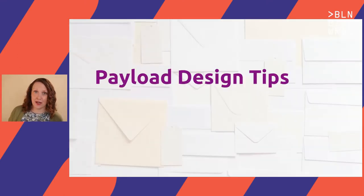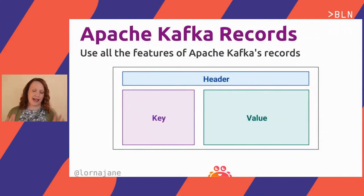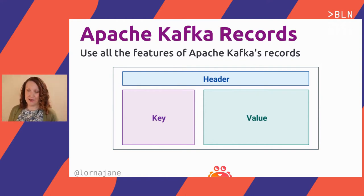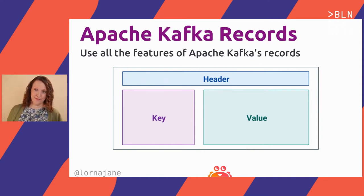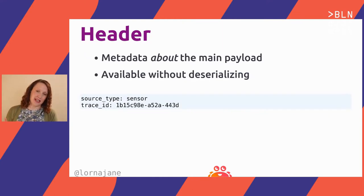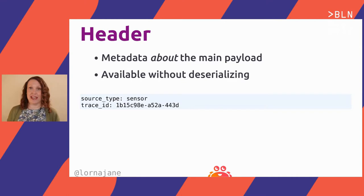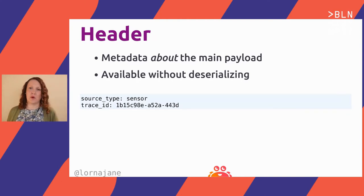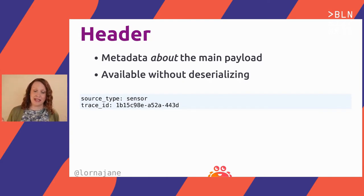Some tips then for designing your payloads. The first one is very Kafka-specific. Apache Kafka has more than just a value field — it actually has a header where you can send metadata along with your Kafka payload. It also has a key field, and then the value that we think of as the main part of the data. The header is useful for data that is about the payload but does not need to be part of the payload — you can think of it similarly to HTTP headers.